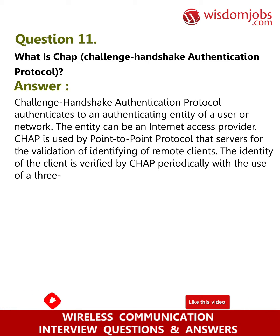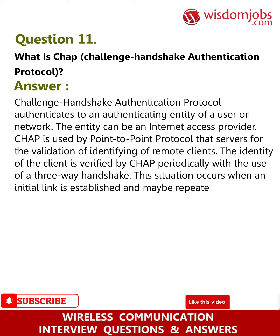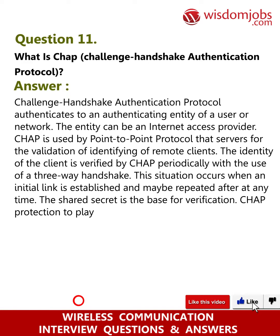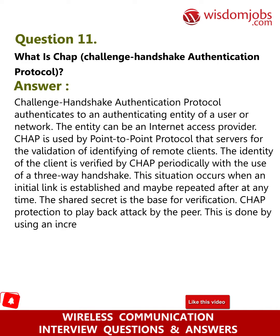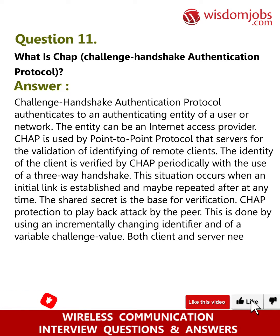The identity of the client is verified by CHAP periodically with the use of a three-way handshake. This occurs when an initial link is established and may be repeated at any time. The shared secret is the base for verification. CHAP provides protection against replay attacks by using an incrementally changing identifier and a variable challenge value.